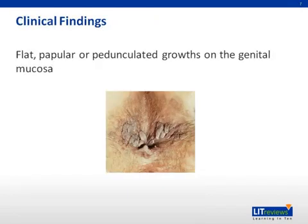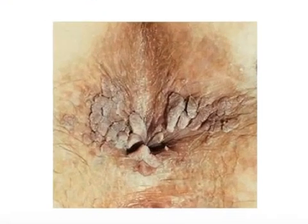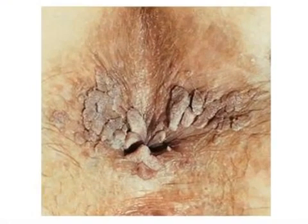Genital warts may appear as flat, papular, or pedunculated growths on the genital mucosa. In this image, they are pictured around the anus. However, they can be identified on any genital surface.